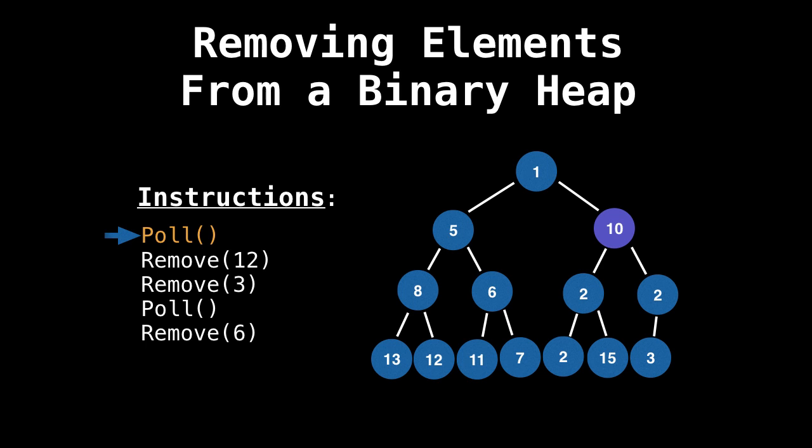So as you can see, 10's children are two and two, they're both equal. So we're going to select the left node to break tie. And now we bubble down 10 again. And now the heap invariant is satisfied.